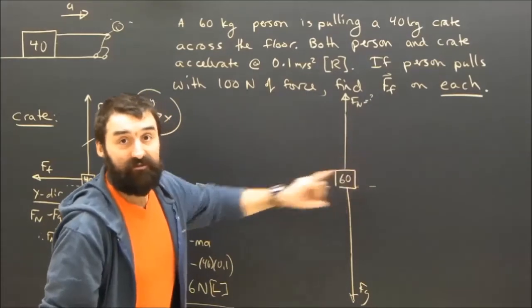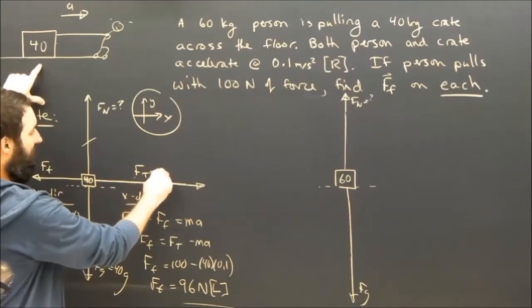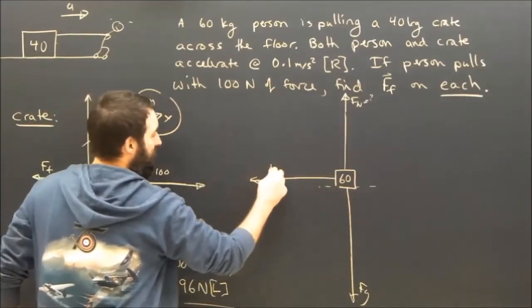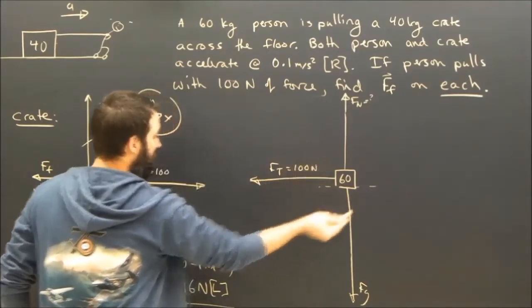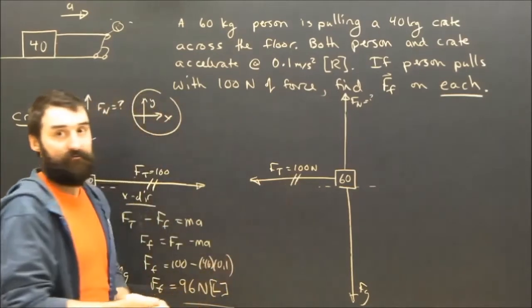If I understand Newton's third law, then I know that if the person pulls on the box with a force of 100 newtons, that the box has to pull on the person with a force of 100 newtons in the opposite direction. And these two forces have to be equal because of Newton's third law.